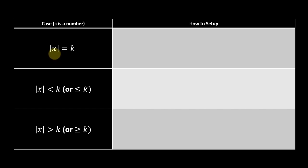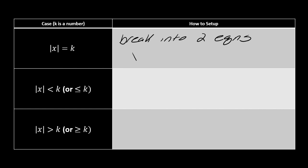With absolute value equations, say you have the absolute value of x equals k, where k is some number. With equations — where you have an equal sign — you break into two cases: x equals k and x equals negative k.